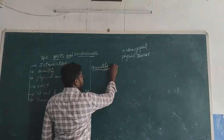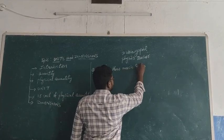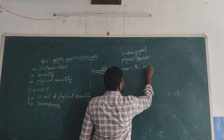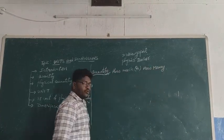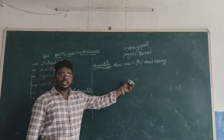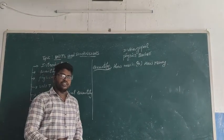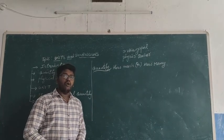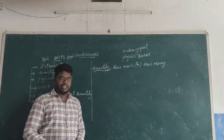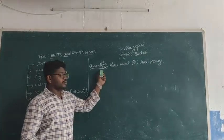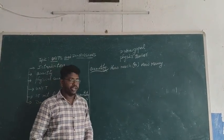Quantity specifies 'how much' or 'how many.' Similarly, if you go to the petrol station, he asks how much you want, and we say 'pour 2 liters' or '200 rupees worth.' So quantity explains how much or how many.